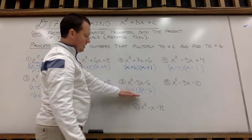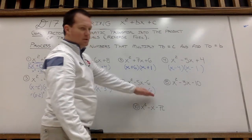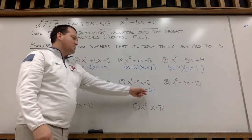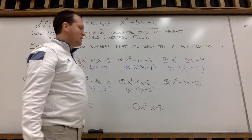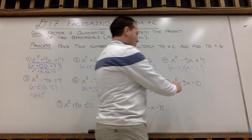But of course, you could write it as x minus 6 times x plus 1. That's okay, but it does matter which number is positive and negative. All right, 3 to go.